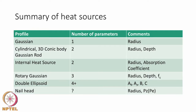Other profiles such as the cylindrical heat source, 3D conical body heat source, and Gaussian rod heat source have two unknown parameters — basically the radius and the depth of penetration. The profile shape of penetration is already determined by the choice of heat source (cylindrical or conical, etc.); only the depth needs to be identified. For the internal heat source, the absorption coefficient becomes the fitting parameter in addition to the radius.